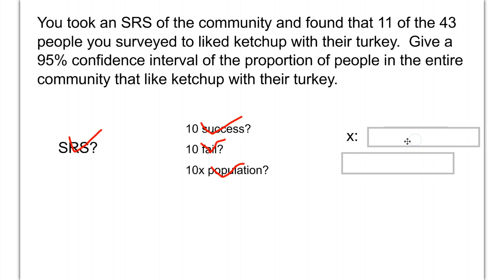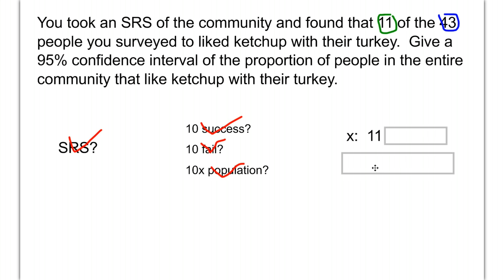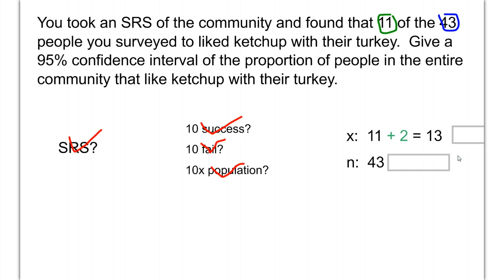Our X value — the number of successes, the number of people who answered yes — is 11. Our N, the total sample size, is 43. The calculator will take care of figuring out failures for us. Now we apply the plus-4 rule: we add two successes to get X equals 13, and we add four total data points to our sample size to end up with N equals 47. So now we have 13 successes and 47 total.